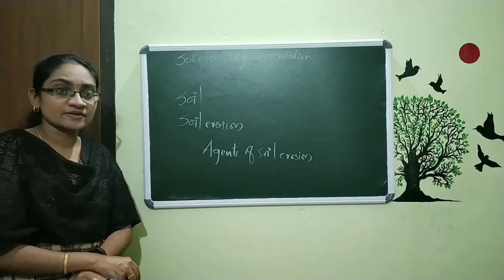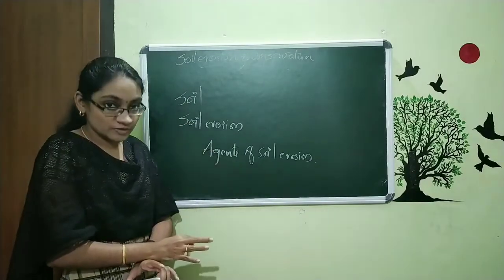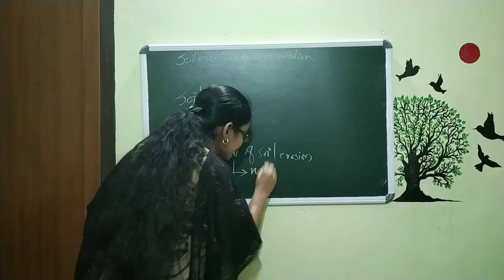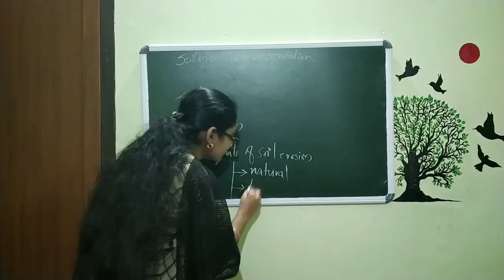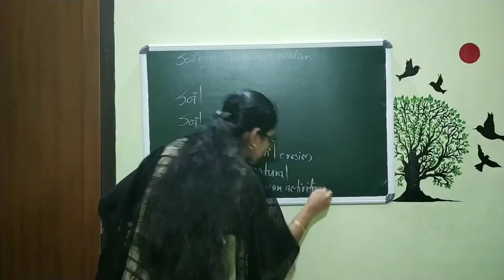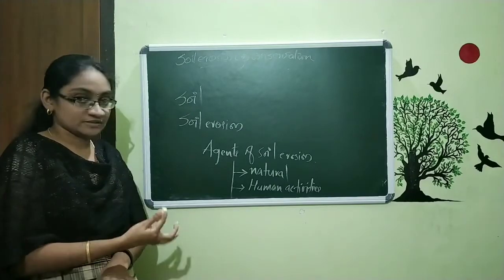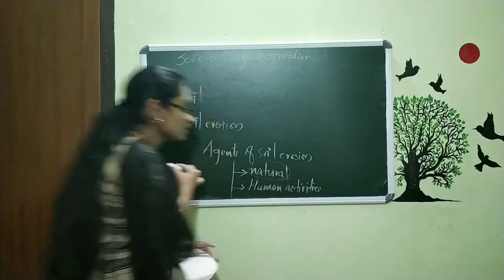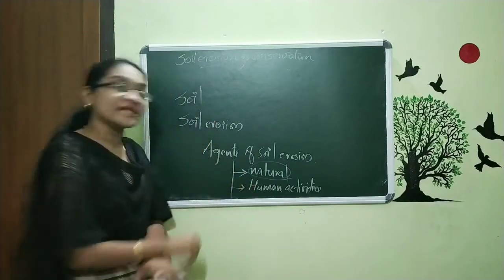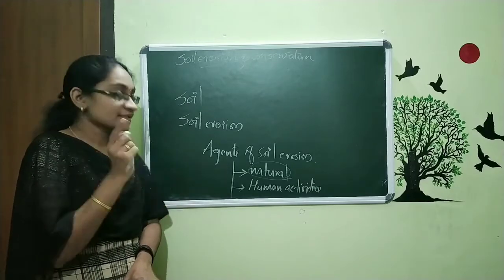Agents of soil erosion means the agents or causes that lead to soil erosion. Within these agents, we have natural agents and human activities. The natural activities — including running water and wind — we already completed. Now we are going to focus on human activities: which are the human activities that lead to soil erosion? That is our today's topic.